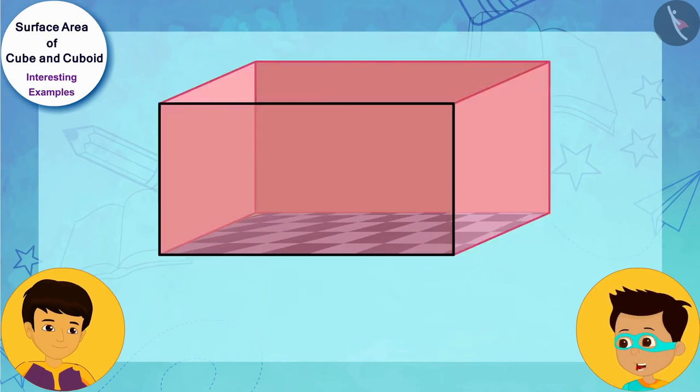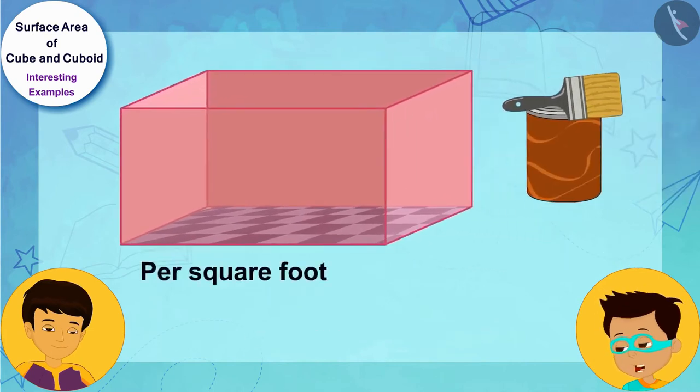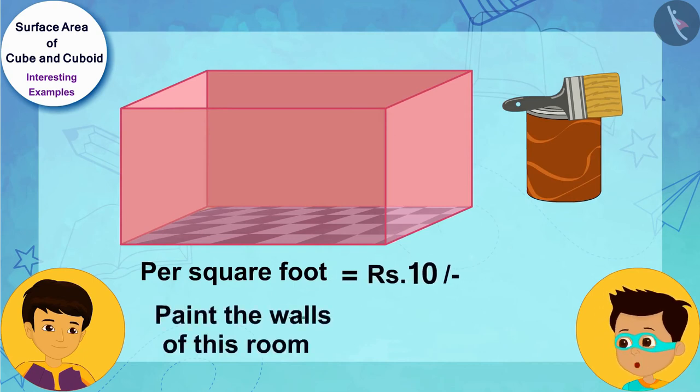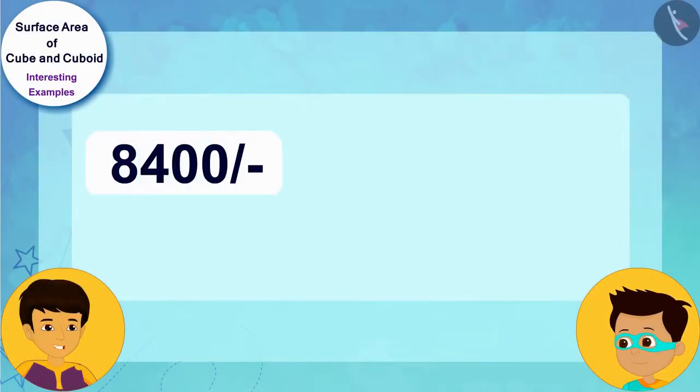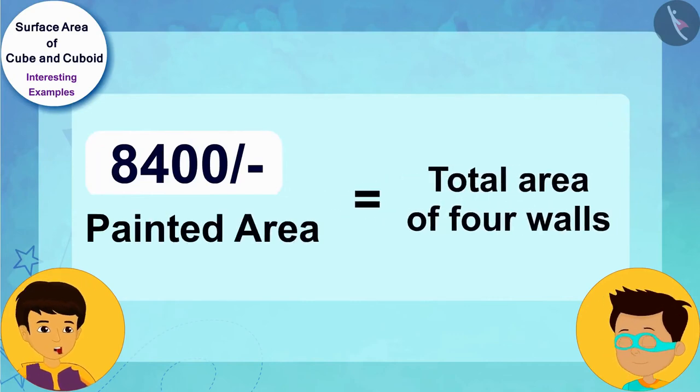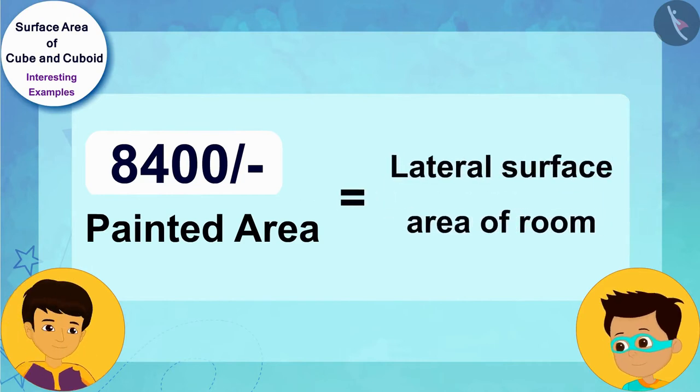It cost us 8400 rupees at the rate of 10 rupees per square foot to paint the walls of this room. The area you painted for 8400 rupees is equal to the total area of these four walls or the lateral surface area of this room.